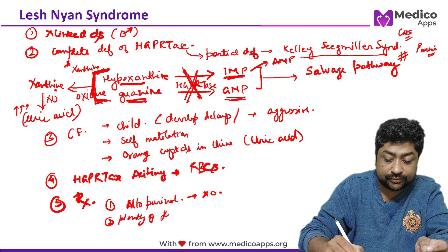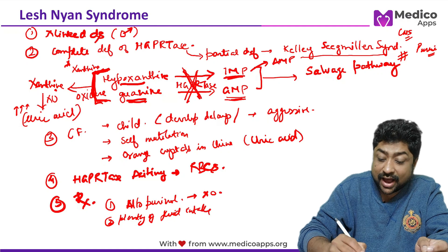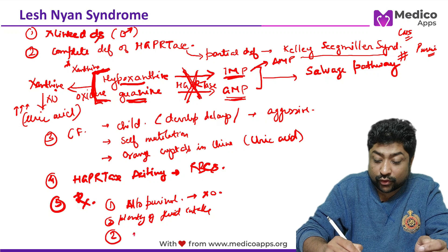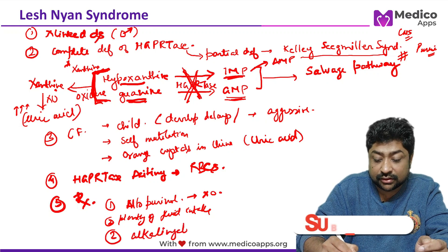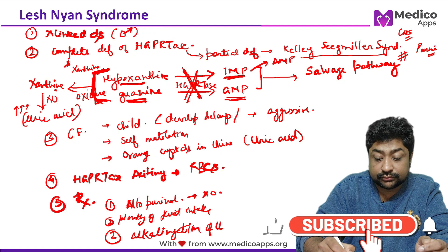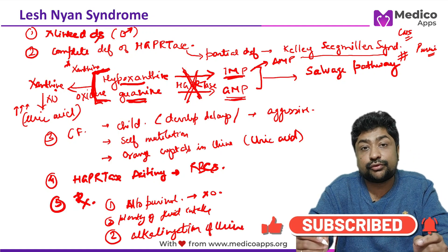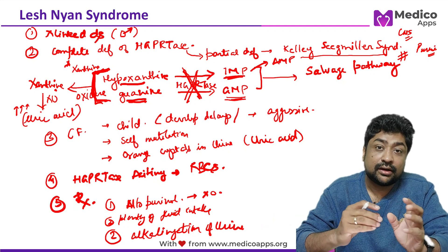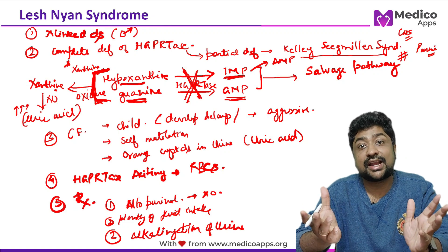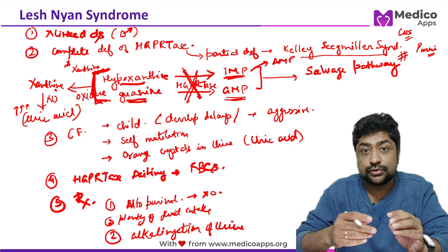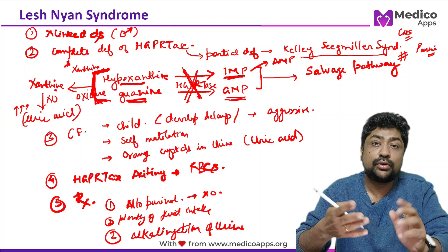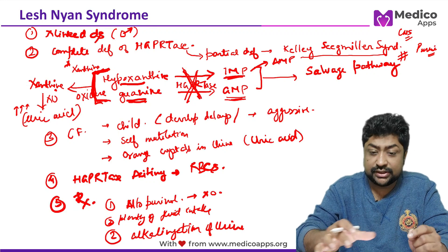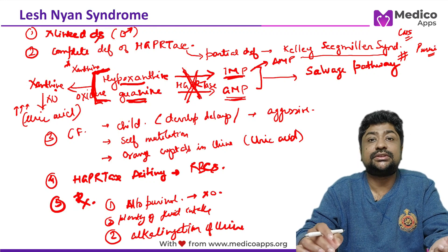Management also includes plenty of fluid intake. Another important point asked in exams is alkalinization of urine. Since uric acid is acidic, an acidic urine pH promotes crystallization. Alkalinizing the urine promotes dissolution and excretion of uric acid.